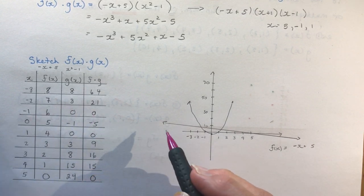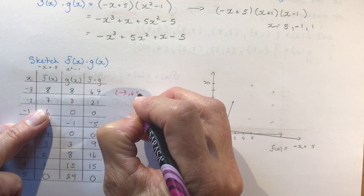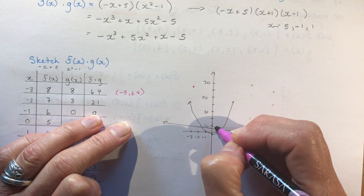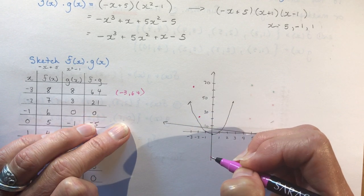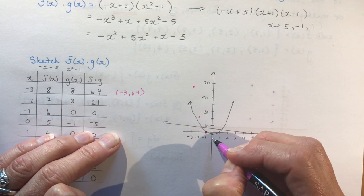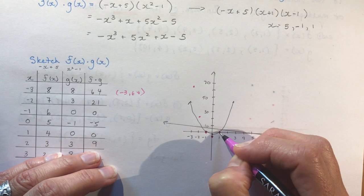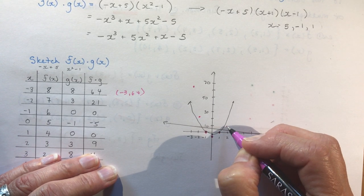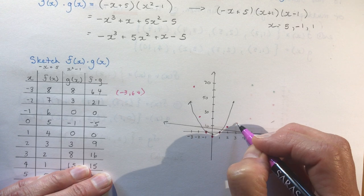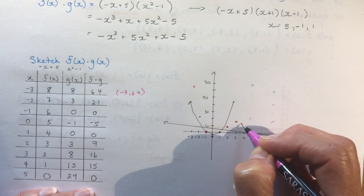Now plotting the cubic f(x)·g(x) using the coordinates from our table: (-3, 64), (-2, 21), (-1, 0), (0, -5), (1, 0), (2, 9), (3, 16), (4, 15), and (5, 0).